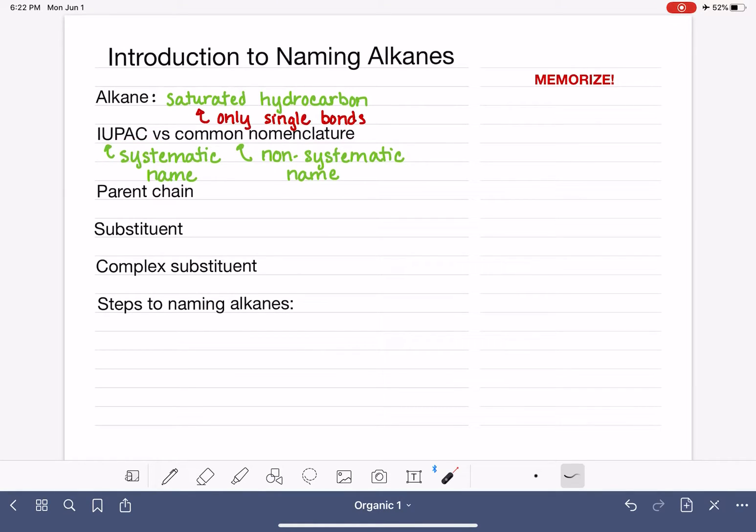So those are the two different methods of naming that we're going to study. And let's get into it. We're really going to focus on learning the IUPAC method. We won't come across common nomenclature for a while. We're going to start with the IUPAC method. When we are naming a molecule according to IUPAC, even if it's not an alkane,